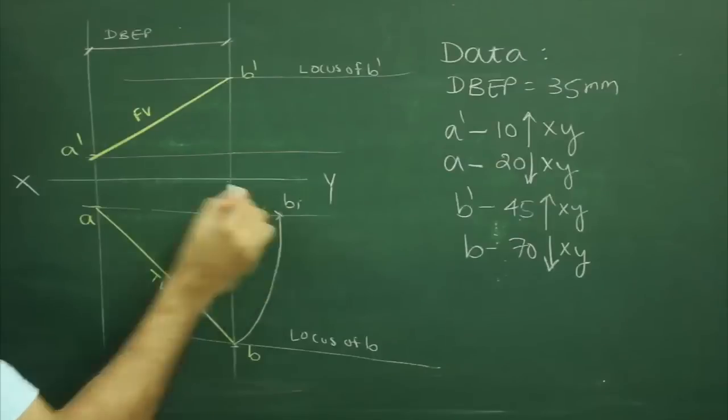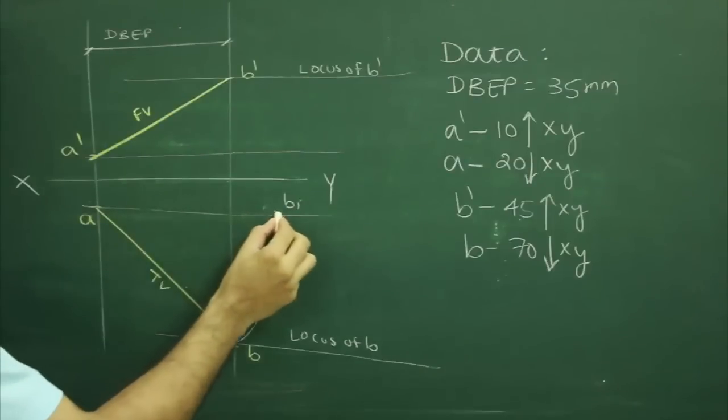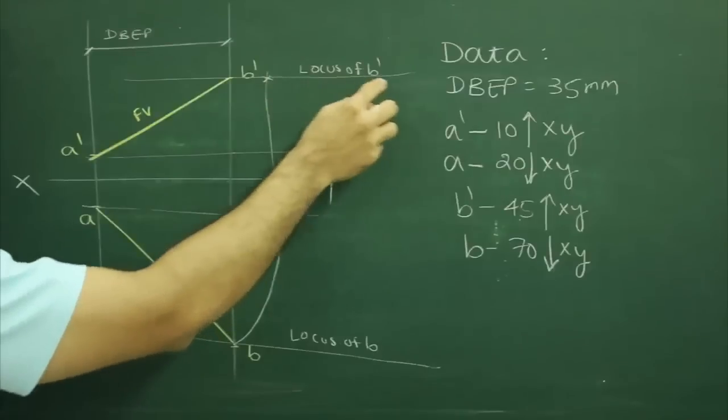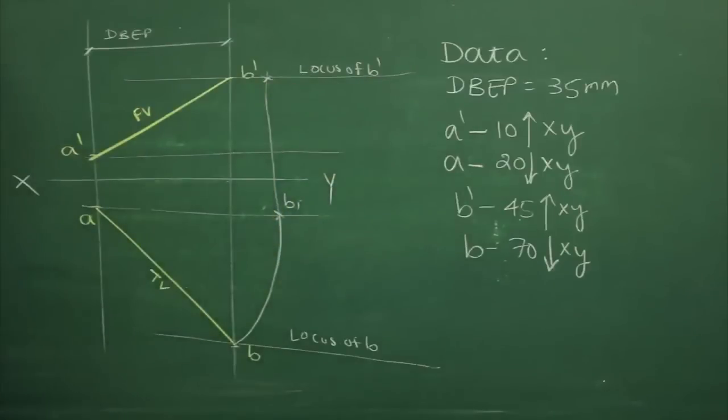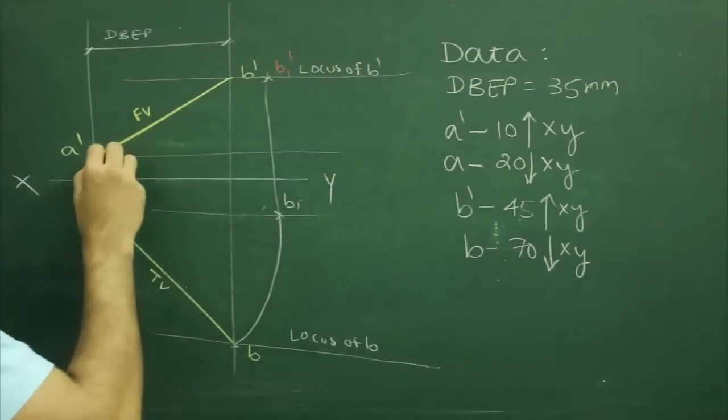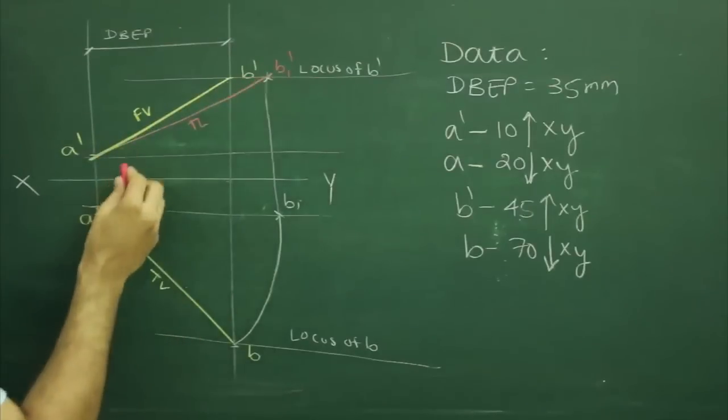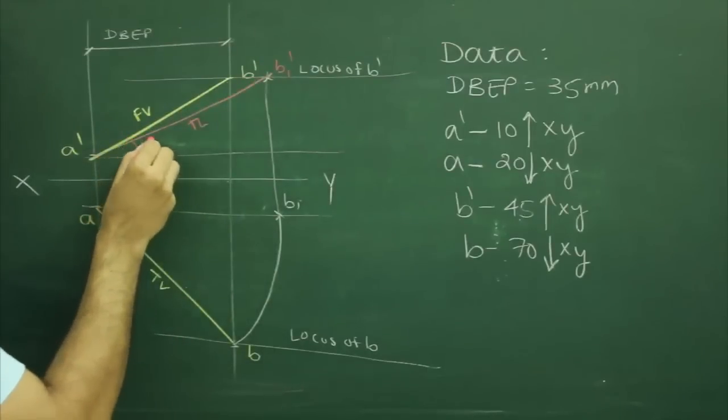This point is B1. Then we will project these points B1 straight up. Wherever it will cut B' that point would be B1', so we got true length as well. And the inclination of true length with horizontal plane is theta.